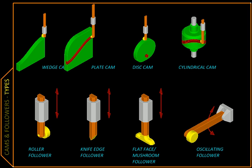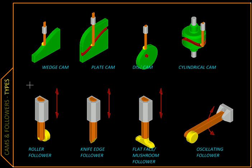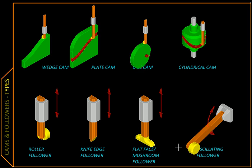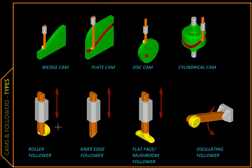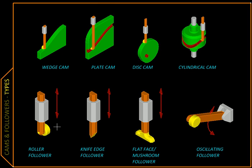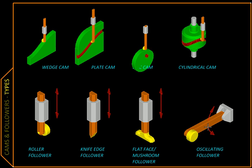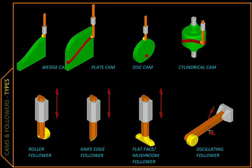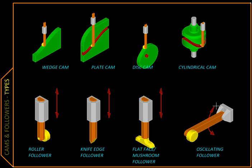Let us see different types of followers now. We can classify the follower motion according to the path they follow. If the followers are going along a straight line back and forth they are called reciprocating followers, while if the displacement is angular like this back and forth then they are called oscillating followers.